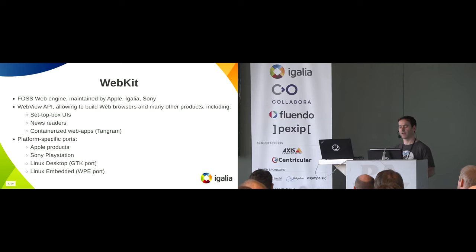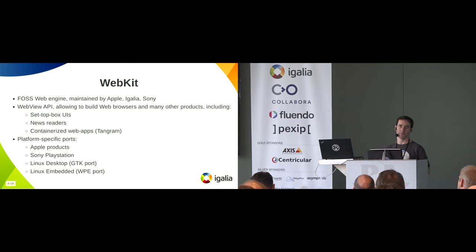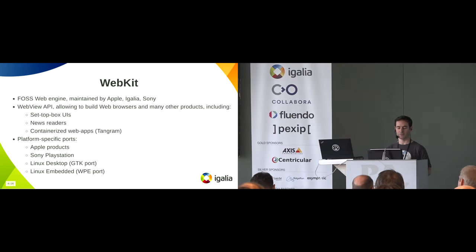On embedded platforms, we have the WPE port, which shares the GLib API with the desktop port. On Linux, we have a common layer called GLib, and then specific bits for embedded platforms.